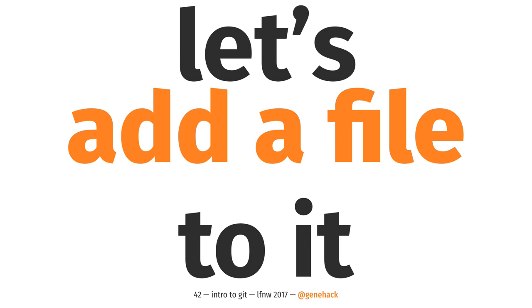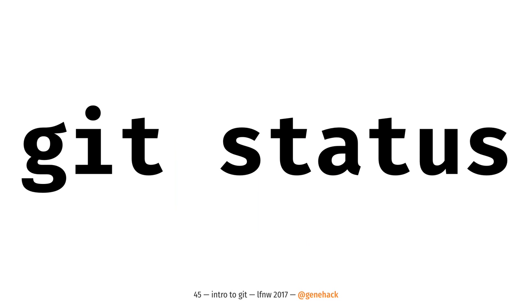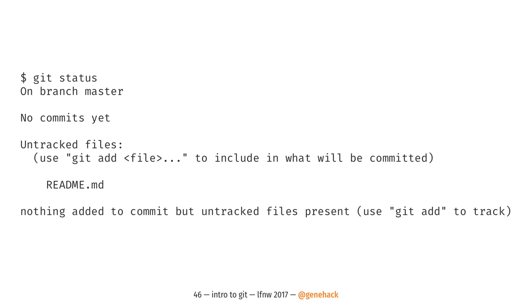Now let's add a file to this repository — let's add a readme file. Typically an open source project will have a file at the root level called README or README.md (in a file format called Markdown) that tells you some introductory material about the project: what problem it's trying to solve, possibly how to build the software, or how to contribute. So let's make that file. We open up an editor, put some basic stuff in the readme, save it, and then ask Git what's going on. The way you do that is by running a command called 'git status.' If we run it, it'll tell us there's this untracked file called readme.md — Git sees this file but you haven't told it about it, so it's kind of ignoring it. And it will tell you: if you want me to pay attention to this file, you need to run 'git add' and then the file name.